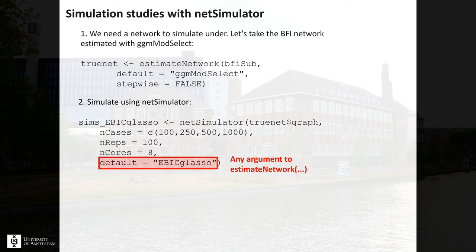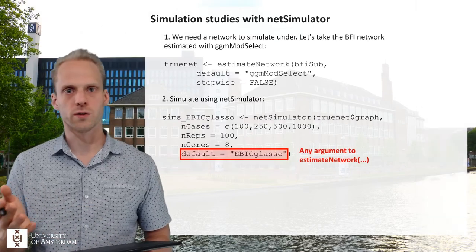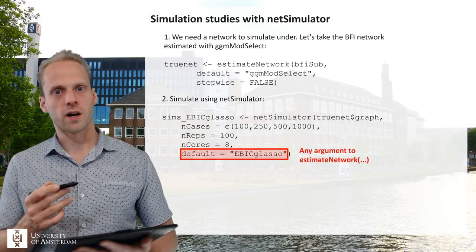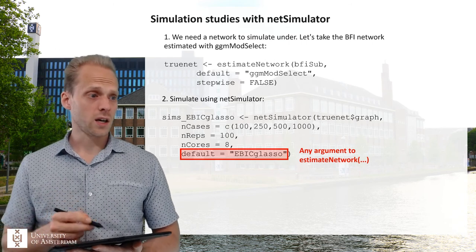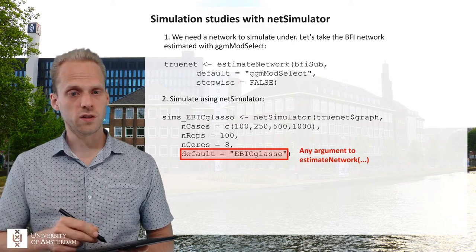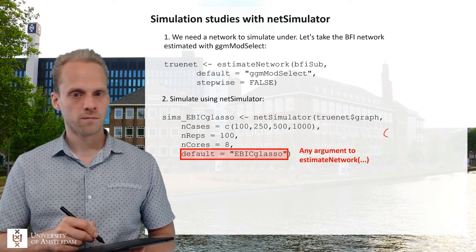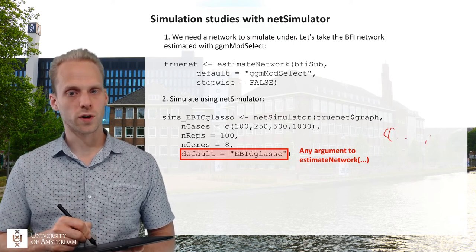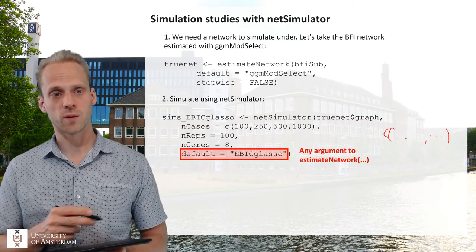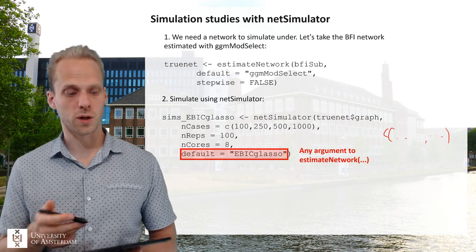Finally, you can use any argument that you use in estimate network. So instead of specifying the full EBIC here, you could say the full equals GDM select, or stepwise equals false, or any other argument. You can even take it further and make this a vector of arguments using the c() function — for example, stepwise equals true and false — and then it simulates under both conditions, which is a pretty powerful thing to do.